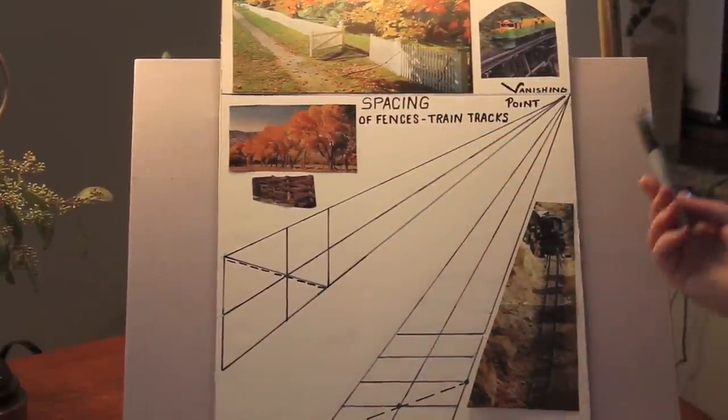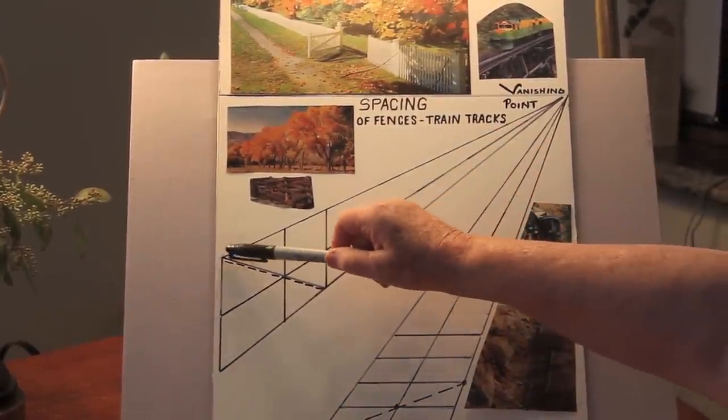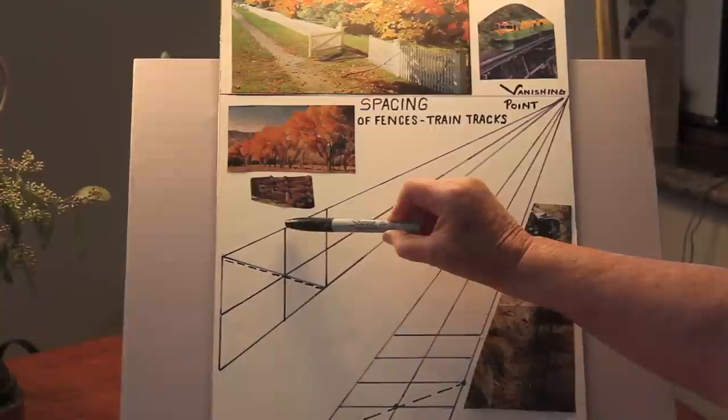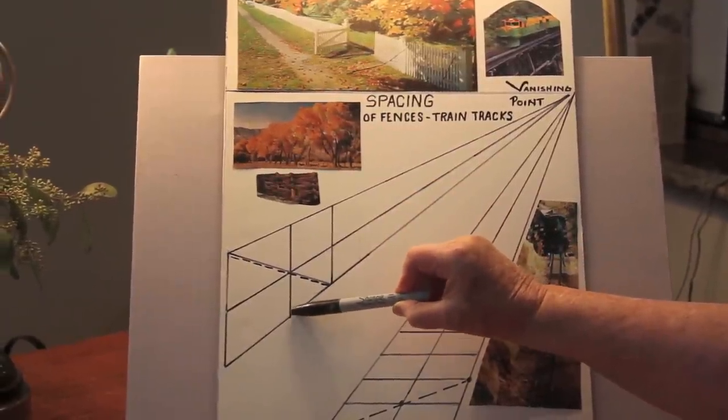The very first thing you need is the first two lines. You've got to have the two lines to establish the distance between the first two fences.